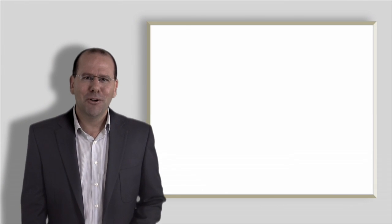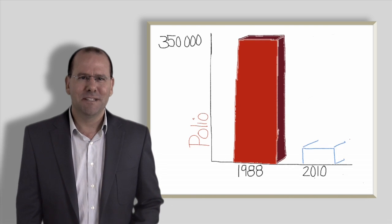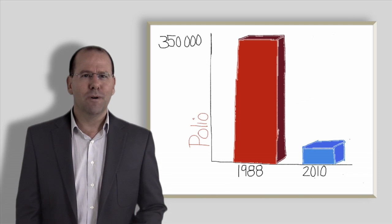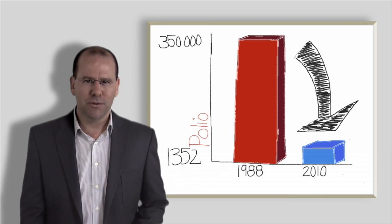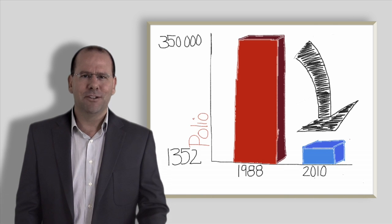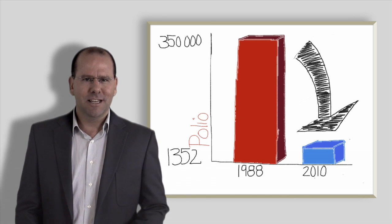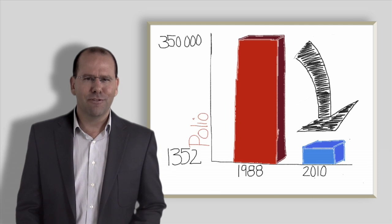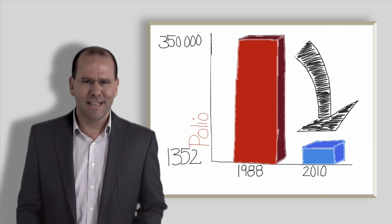Fact number eight. Polio cases have decreased by over 99% since 1988 from an estimated 350,000 cases to 1,352 cases reported in 2010. This reduction is a result of a global effort to eradicate the disease. Only three countries, Afghanistan, Nigeria and Pakistan remain polio endemic. This is down from more than 125 countries in 1988.